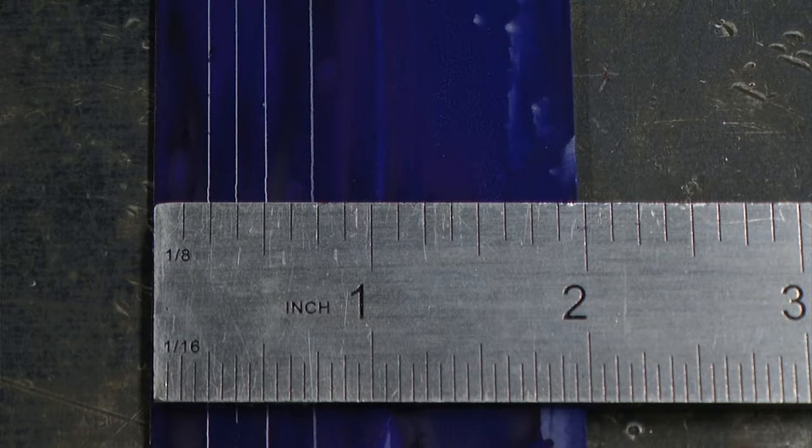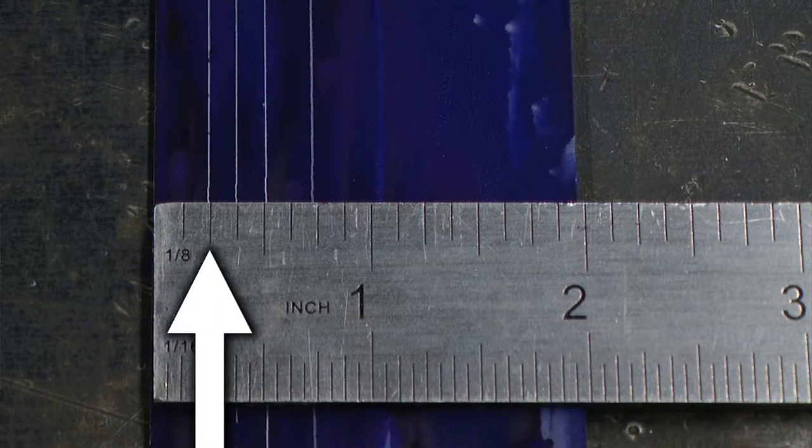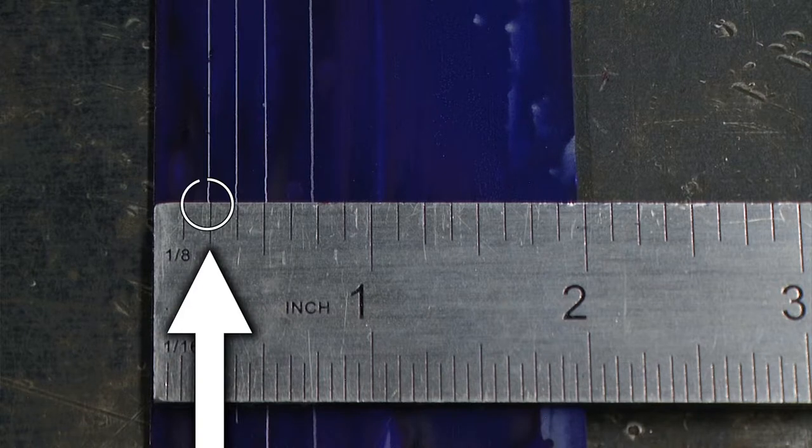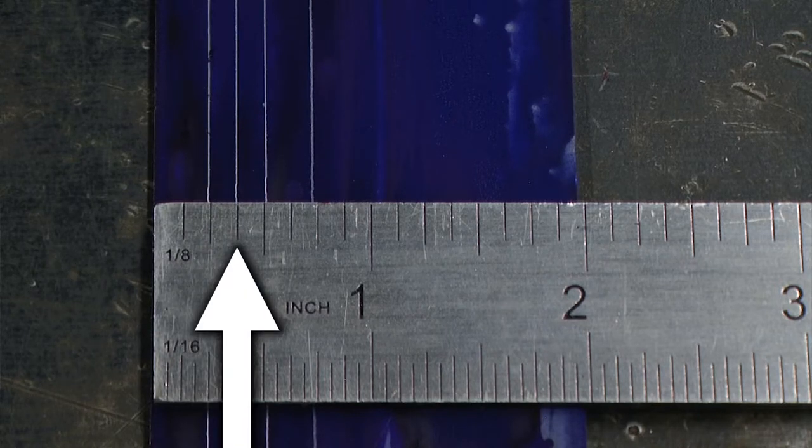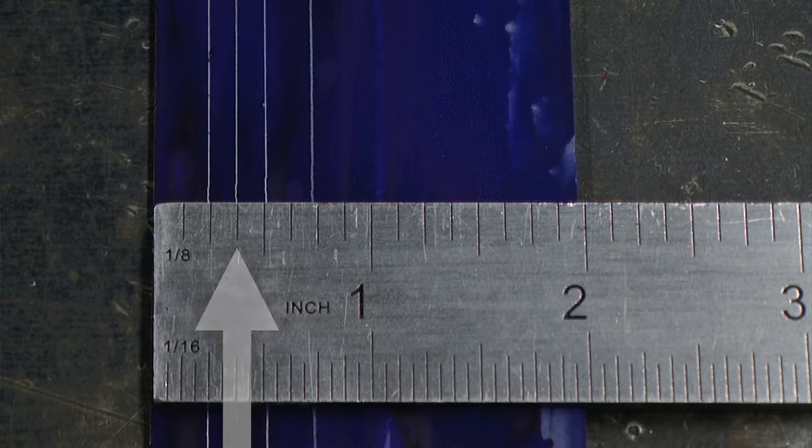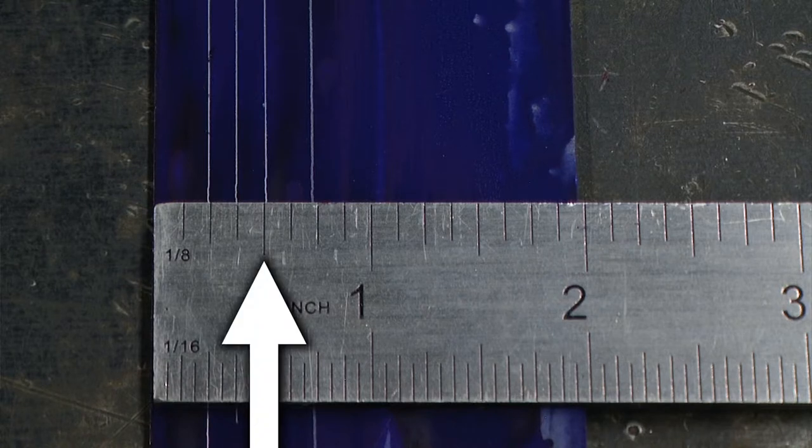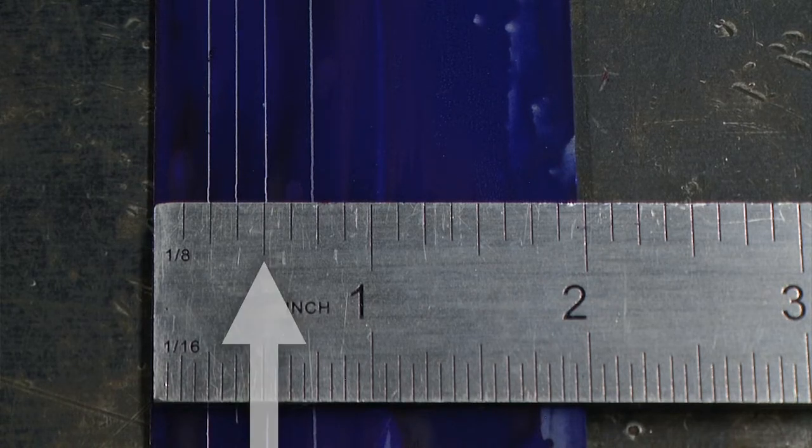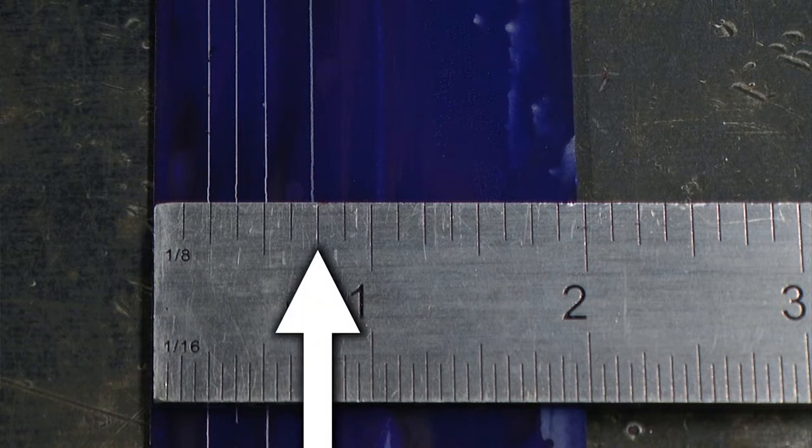Here I can see that my quarter inch measurement is slightly small. My three-eighths inch measurement is pretty much right on. My half inch measurement is slightly big and my three-quarter inch measurement is slightly small.